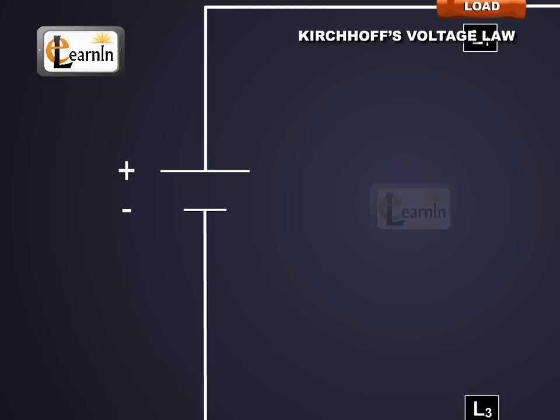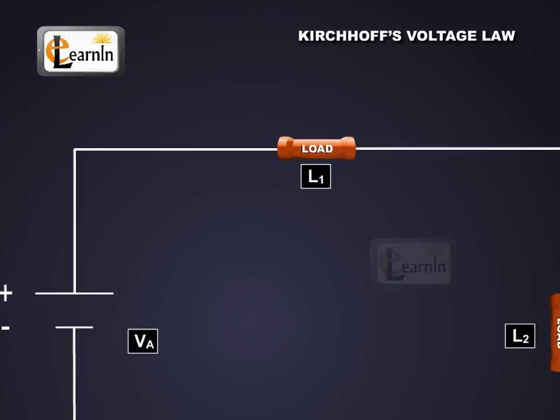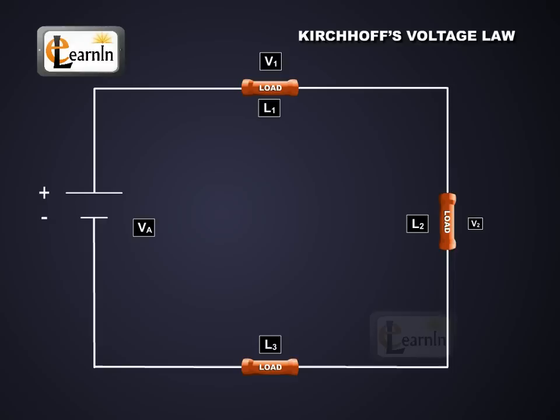Since we know that a resistor will have a voltage drop across it when connected to a battery, we've labeled the voltage drops as V1, V2, and V3 for loads L1, L2, and L3, respectively.